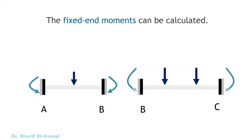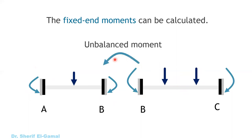We divide the beam into two parts: span AB and span BC. For each span, we calculate the fixed end moments from the fixed end moment table. At joint B, the fixed end moments from the left (MBA) and right (MBC) are generally different, resulting in an unbalanced moment. For this joint to be in equilibrium, we need a counter-balancing moment opposite to the unbalanced moment.